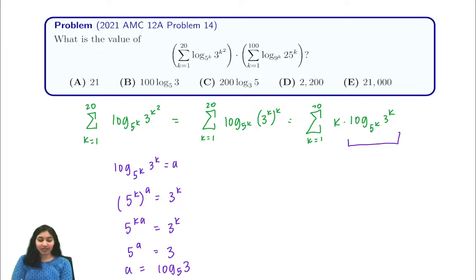We took this complicated expression from up here and we made it a simple constant. Now we plug this into our equation and we see that this is equal to k from k equals 1 to 20 of k times log base 5 of 3.